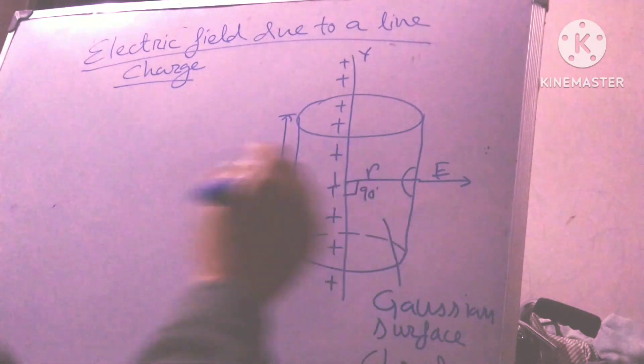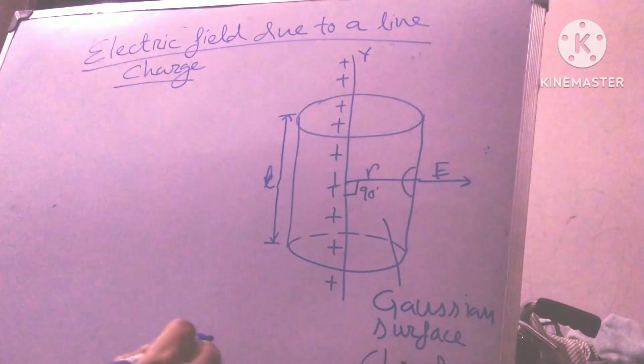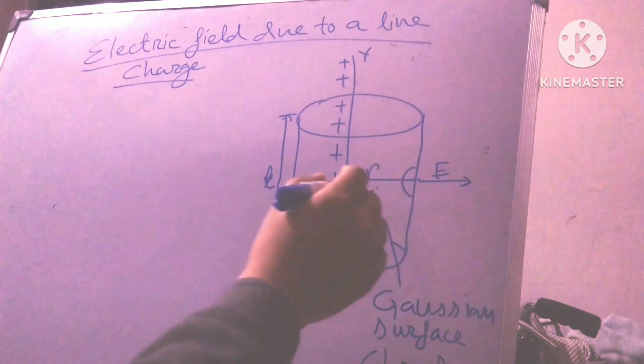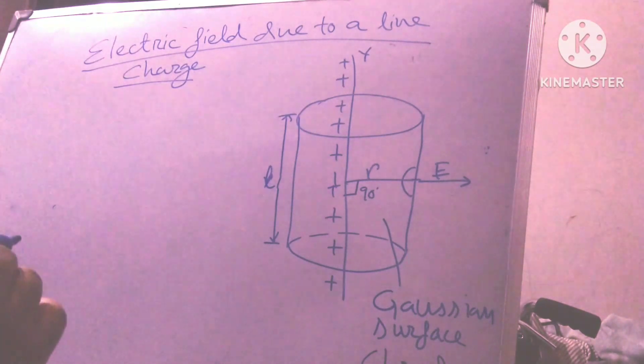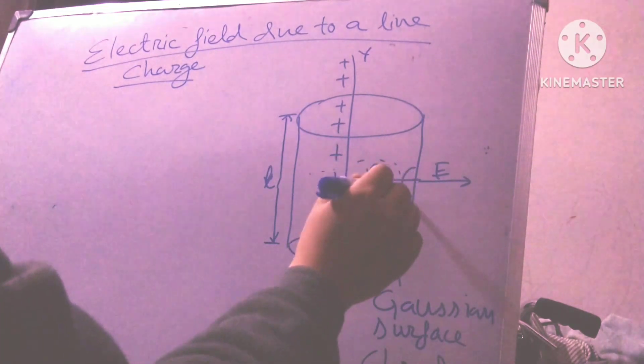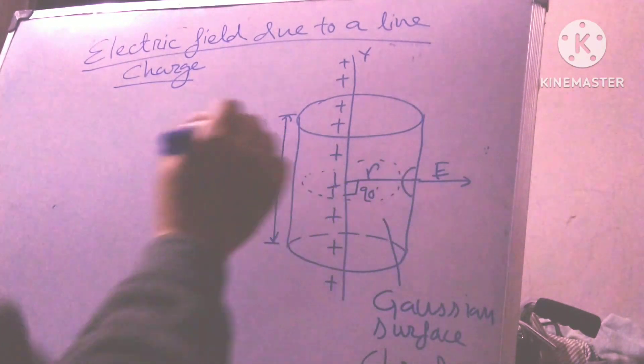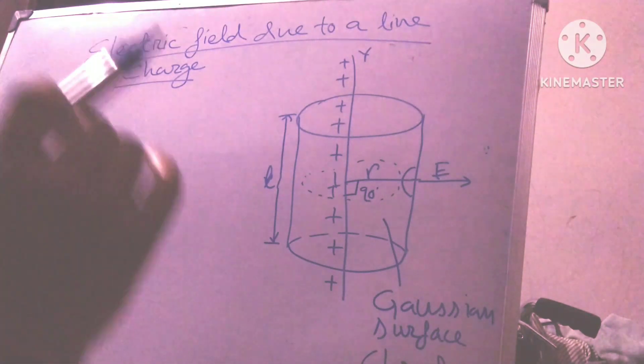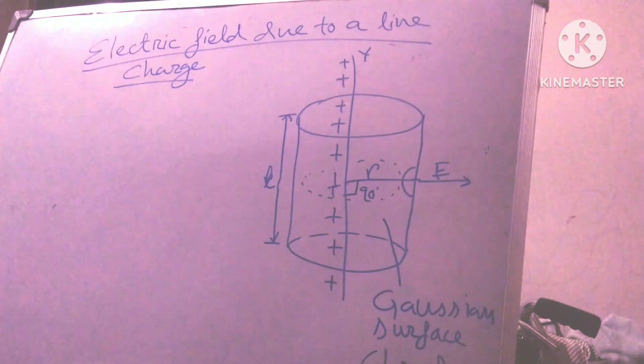So this is the Gaussian surface and you see that electric flux through the surface is along the normal and electric field intensity at all points, all the points you see here, electric field intensity is equal. So this is my Gaussian surface, friends.